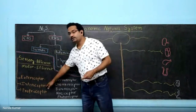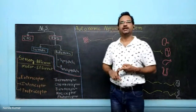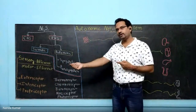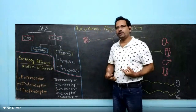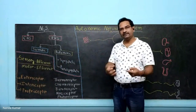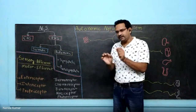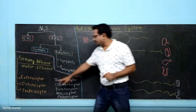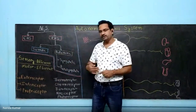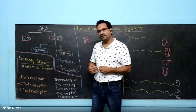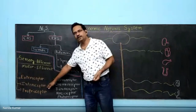The next one is interoceptors. The nervous system's function is to receive signals from the external environment as well as the internal environment. Inside, you have organs such as kidney, liver, and heart. If any change occurs, it is checked by interoceptors, which are present inside organs. They check the difference and send the signal towards the CNS.